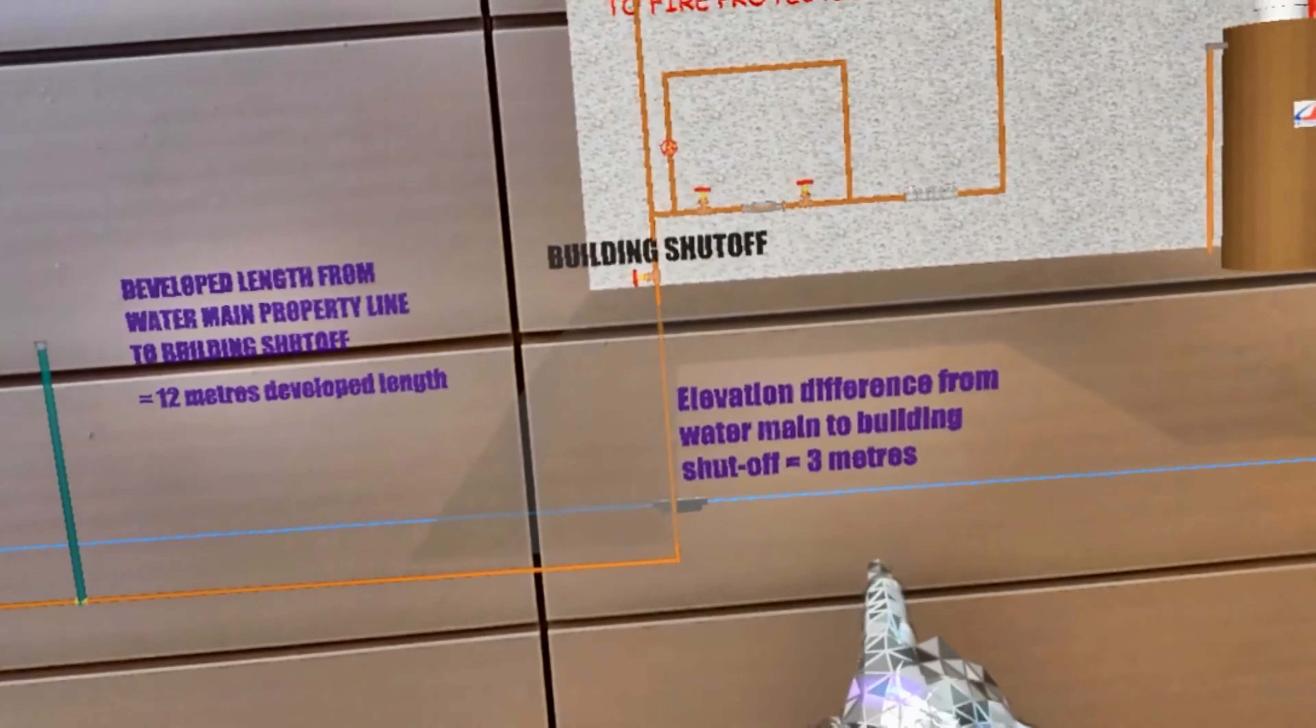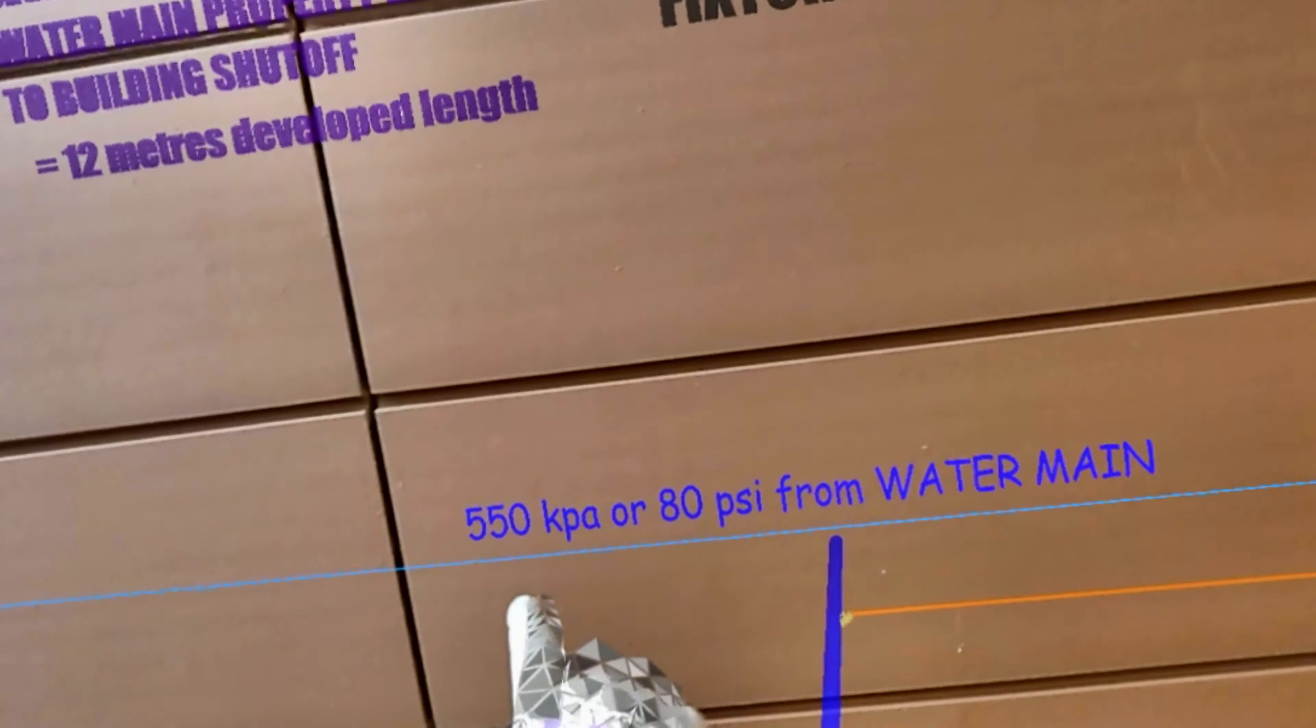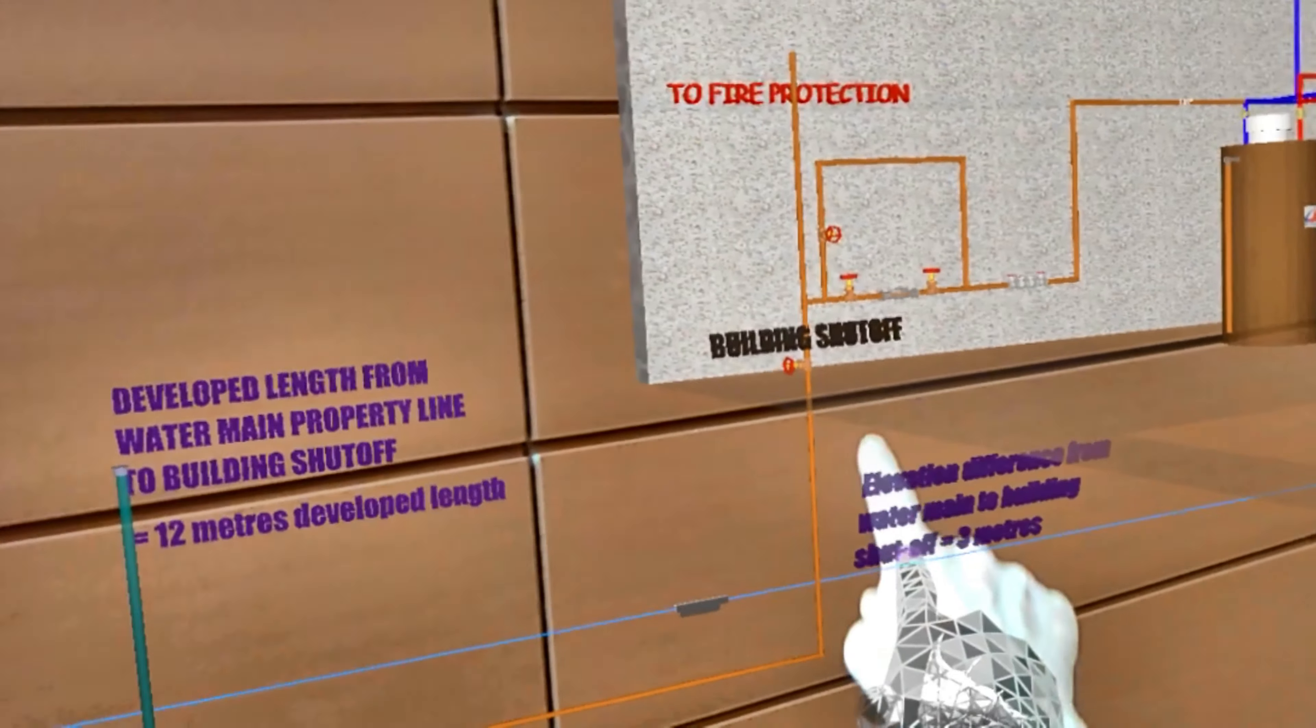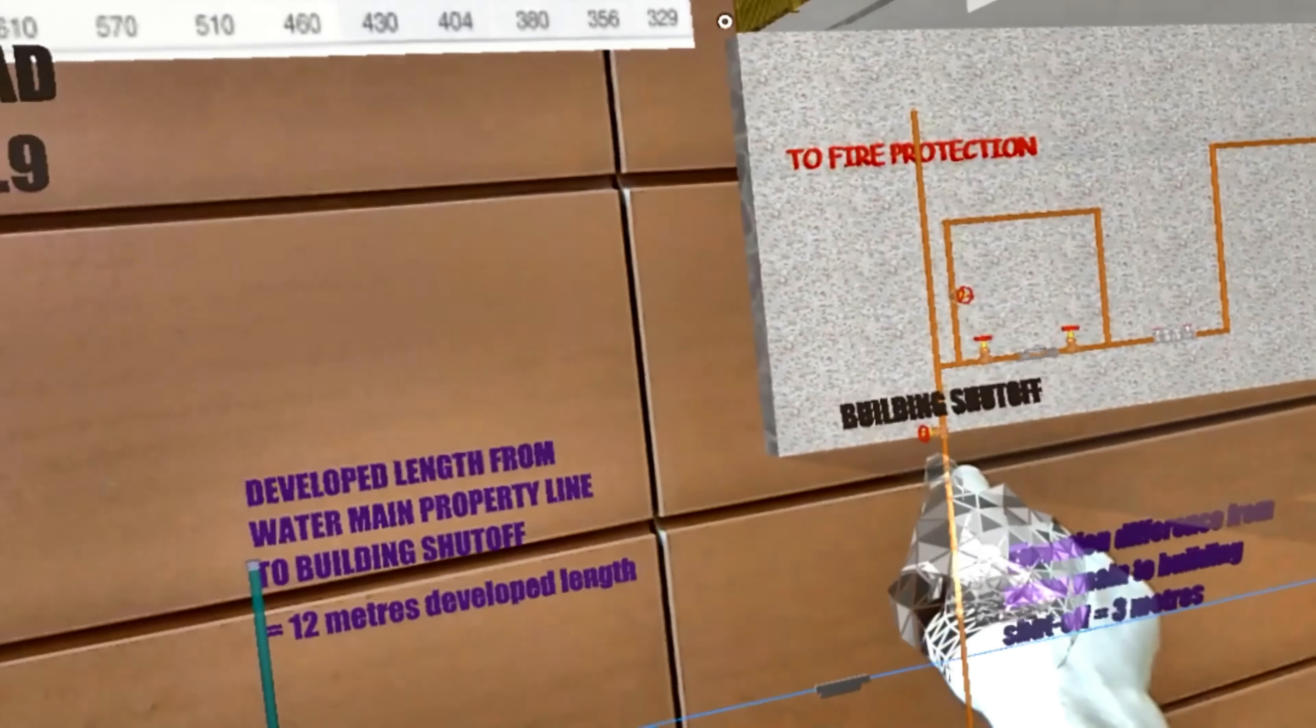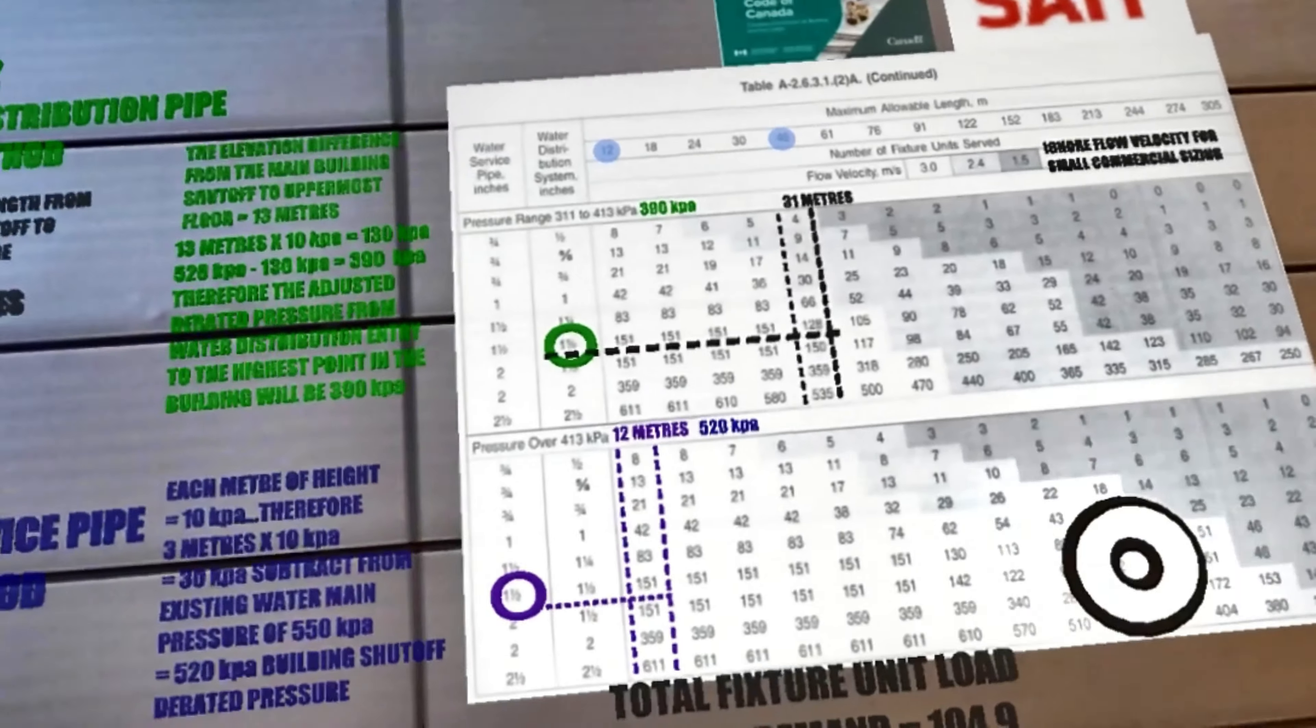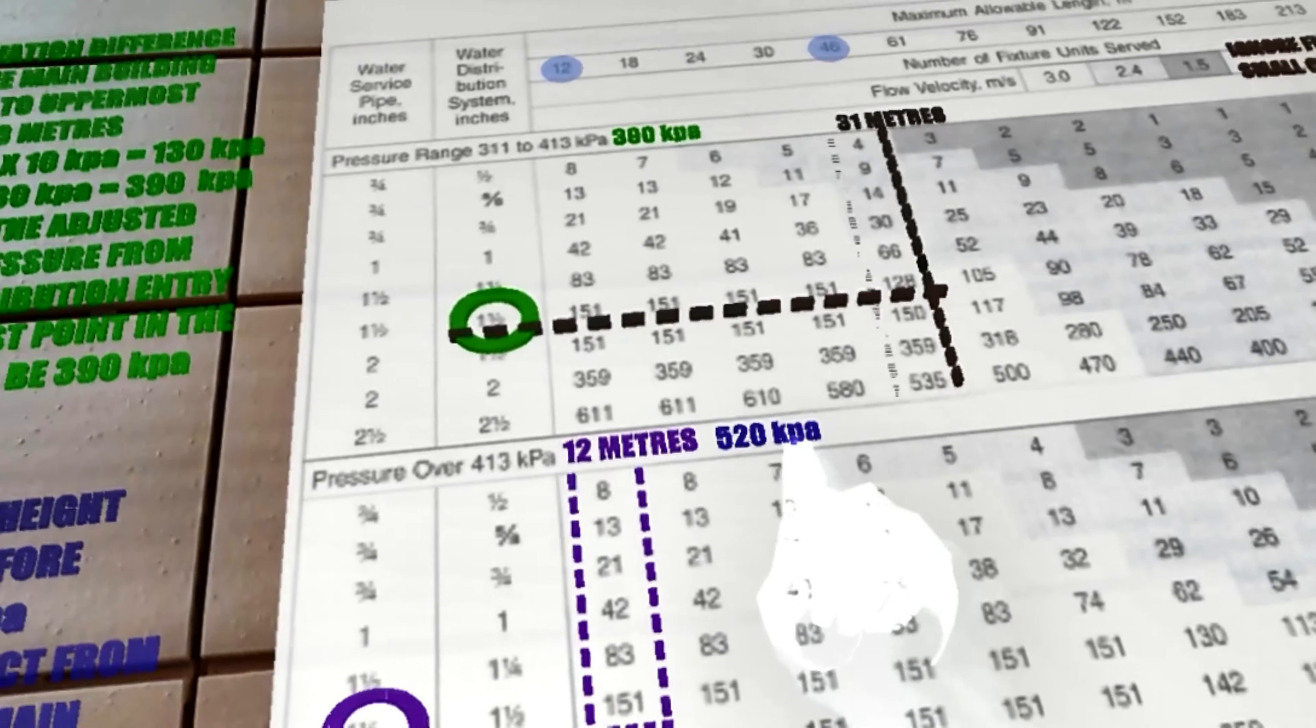And every meter is worth 10 kPa, so you go over here to the water main. This is 550 kPa. You subtract the 30 kPa from here and the new elevated pressure will be 520 instead of 550. So you use the 520 and you go to this chart here which is over 413 because ours is 520, so this is the chart we use.